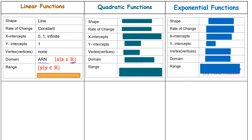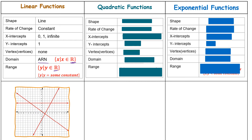The domain of a linear function is all real numbers, written as x such that x is an element of all real numbers. The range is also all real numbers, or it can equal some constant for a horizontal line. For example, a horizontal graph has no x-intercept and its range is a constant like y equals negative 4. Another graph may have one x-intercept and one y-intercept, while a third type crosses the x-axis an infinite number of times.